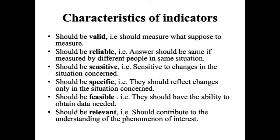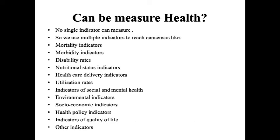An indicator should be reliable — the answer should be the same if measured by different people in the same situation at different places. It should be sensitive to changes in the situation concerned, specific so that it reflects changes only in the situation concerned, feasible meaning it should have the ability to obtain the data needed, and relevant so it contributes to the understanding of the phenomenon of interest.